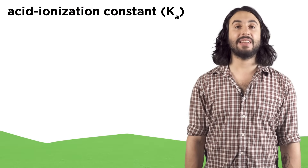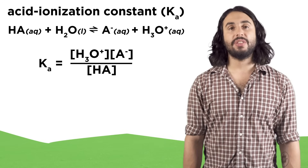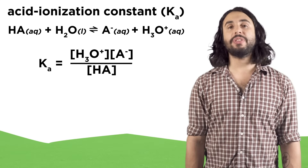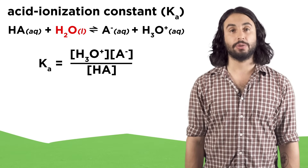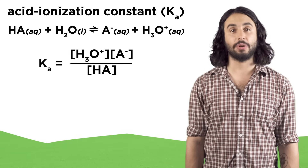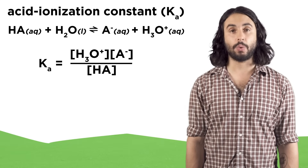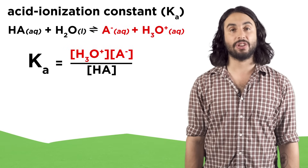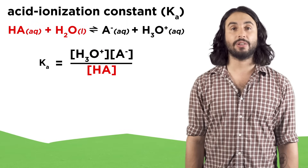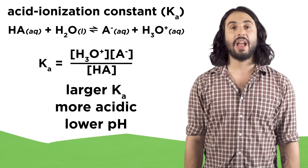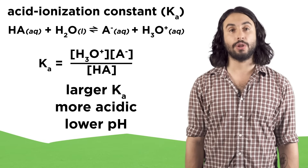Ka is the acid ionization constant. This is derived just like we got Kc for generic chemical equilibria. Note that we don't include water as it's a pure liquid. In this way, Ka is a measure of how thoroughly an acid-base reaction proceeds in the forward direction. A larger Ka means more products and a stronger acid; a smaller Ka means more reactants and a weaker acid. So an acid with a larger Ka will be more acidic and therefore associated with a lower pH.